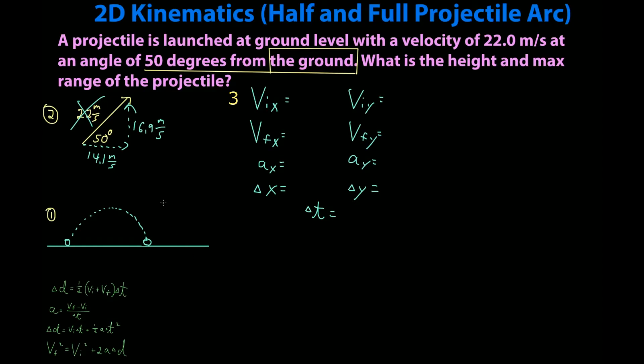First we're going to go after the height, which means my initial point is at the ground here. My final point is when the projectile is at its highest point. So I'm going to label that here. Now I can start listing givens.